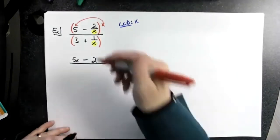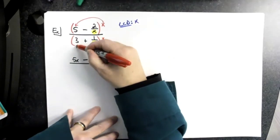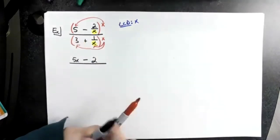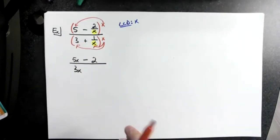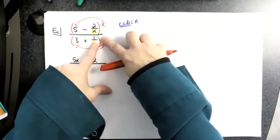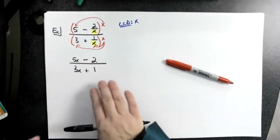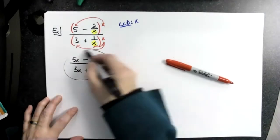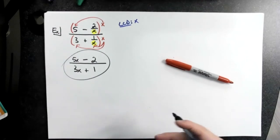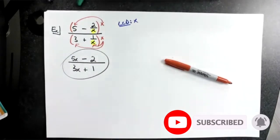To keep everything balanced, I do the same thing at the bottom. Distributing x to 3 gives 3x. Distributing x to 1 over x: those x's cross out, leaving just 1, so I have plus 1. Then I look at the result — a binomial on top and a binomial on the bottom, nothing factors out — so that's the simplified answer. Once you get good at multiplying through by the LCD, it's a very fast procedure.